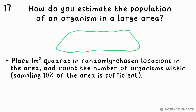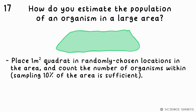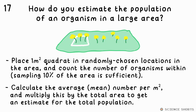You use a quadrat, place it in random locations in the area, and count the number of organisms in those squares. Ideally you should sample 10% of the total area. Then you calculate the average number of organisms per metre squared and multiply by the total area to get an estimate of the total population.